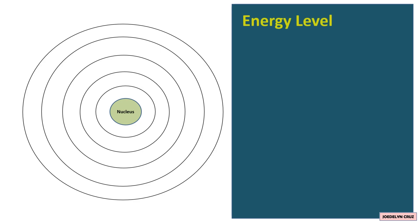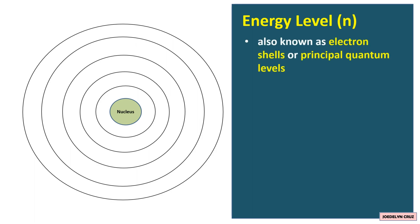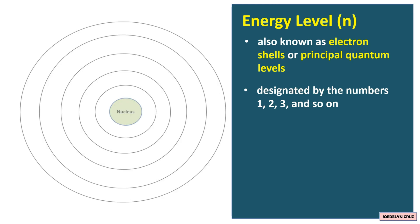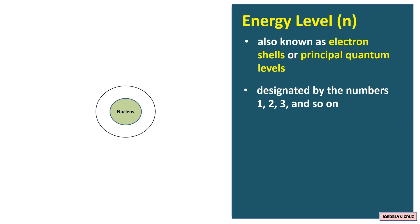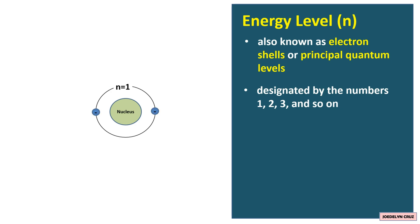An atom has different energy levels which are represented by the symbol N. The energy levels are also known as electron shells or principal quantum levels. These energy levels are designated by the numbers 1, 2, 3, and so on. In an atom, this is the first energy level or N equals 1. The first energy level is the closest to the nucleus and has the lowest energy.